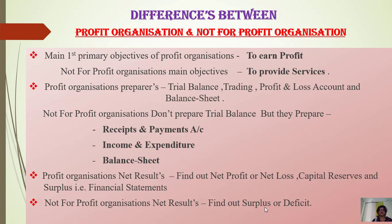NPO — not-for-profit organization — does not find out profit and loss, because the main motto and objective is to provide services, not to earn profit. That's why NPO's net result is surplus or deficit. The meanings of surplus and deficit will be explained later, one by one. Is it clear now — the differences between profit organization and not-for-profit organization?